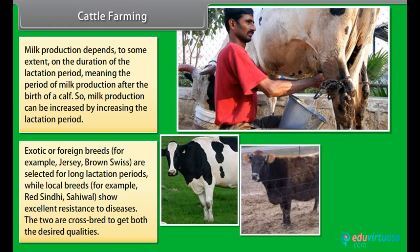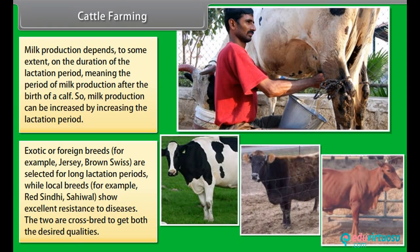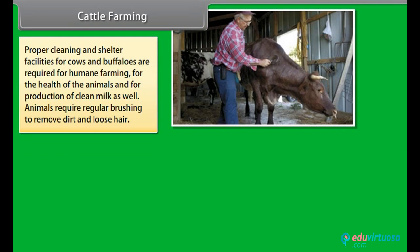Local breeds — for example, Red Sindhi and Sahiwal — show excellent resistance to diseases. The two are cross-bred to get both desired qualities. Proper cleaning and shelter facilities for cows and buffaloes are required for humane farming, for the health of the animals and for production of clean milk as well.